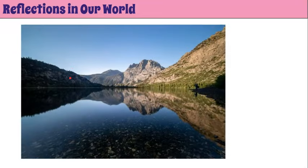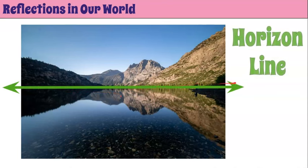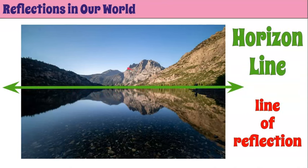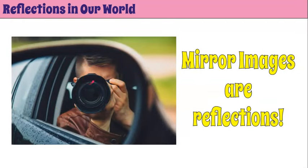Reflections in our world. Here's an image of a landscape over water. The horizon line is our line of reflection. Notice that the mirror image in the water — everything above the horizon is completely reflected, same size and shape, over the line of reflection. Here's another example: a car mirror, where you can see a person with a camera and his reflection is a mirror image.